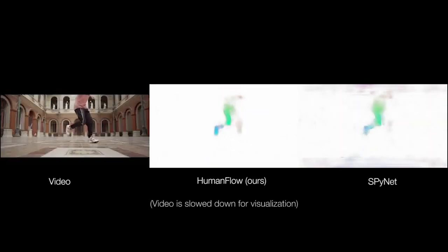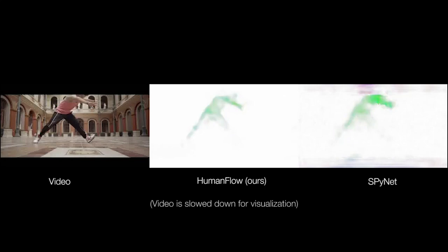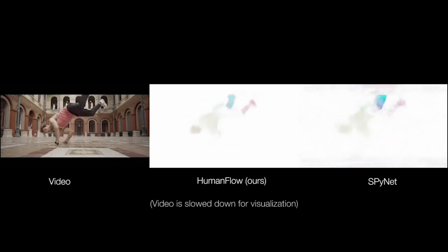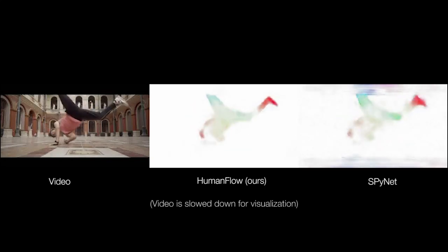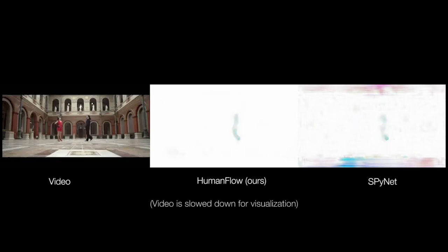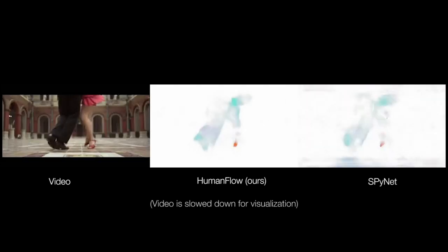Consequently, human flow works on sequences with cropped and partial views of the body. The method generalizes to motions like breakdancing that were not seen in training. It also works on multiple people.